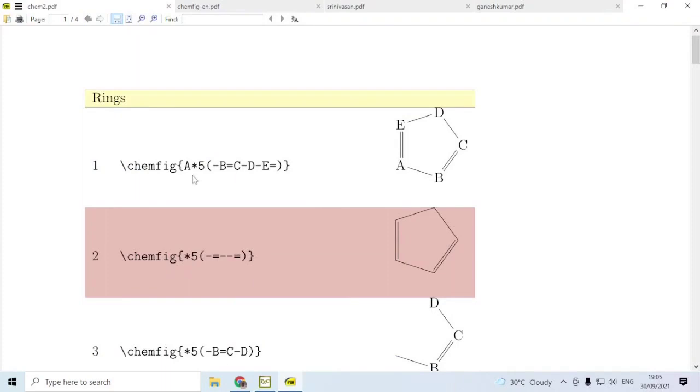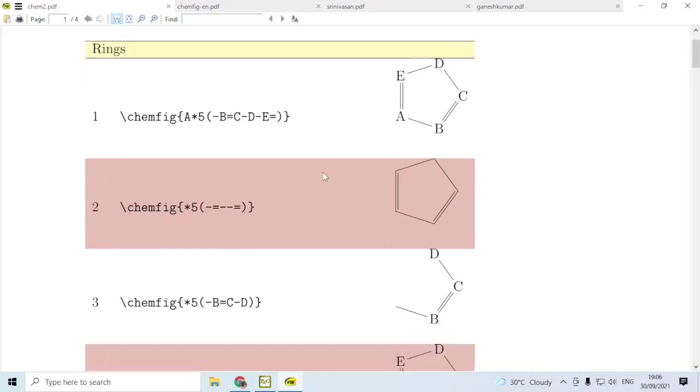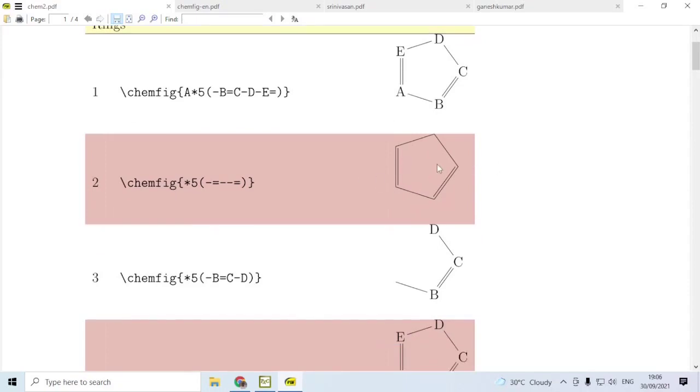If you use the code \chemfig{A*5(-B=C-D=E-)}, that means we are going to have a 5-sided ring. The ring has got the bonds: single bond, double bond, single bond, single bond, and then double bond. And atoms are also mentioned as B, C, D, and E. Then you get a ring like this, a 5-sided ring. If we do not specify the atoms, we can get the ring alone like this.